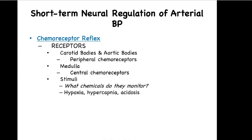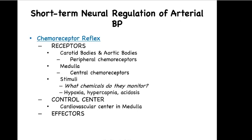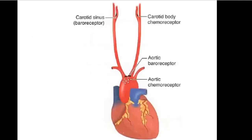Remember, the normal pH range is between 7.35 and 7.45. The control center is the same cardiovascular center in the medulla. The effectors are the same: the heart, including the SA and AV nodes and the myocardium, and the smooth muscles within the blood vessels. The SA and AV nodes are innervated by both sympathetic and parasympathetic branches of the autonomic nervous system, but the myocardium is innervated only by the sympathetic branch. Vascular smooth muscles are innervated by the sympathetic branch as well. You can see on the illustration the chemoreceptors very close to where the baroreceptors are located.